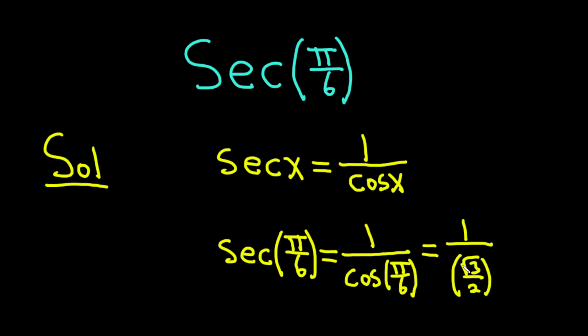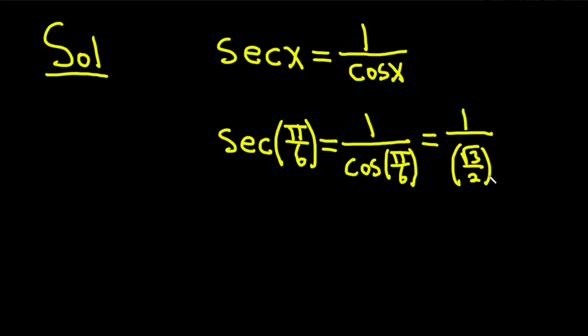So, when you divide, you multiply by the reciprocal. So, this is equal to 1 times the reciprocal of square root of 3 over 2. So, 2 over the square root of 3. So, you end up with 2 over the square root of 3.